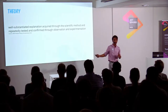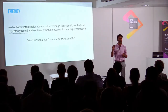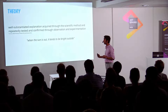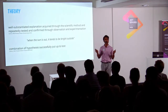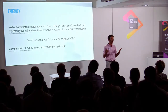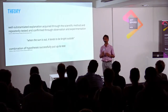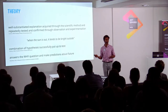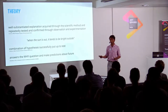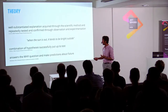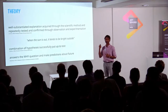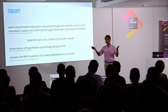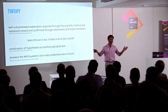For this example, the theory would be: when the sun is out, it tends to be bright outside. Notice how this theory has certain elements — it's a combination of hypotheses which were put to test, and the successful ones were kept. The other critical thing about a theory is that it answers the why question: why is it bright outside? And it also gives us a future prediction: I know that when the sun is out, it is going to be bright outside — unless, of course, you're in Hamburg where it's gloomy and rainy.